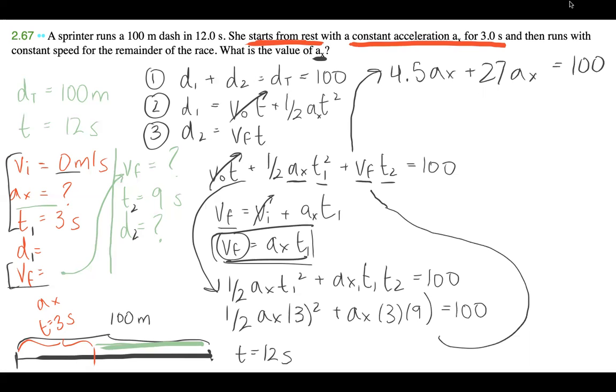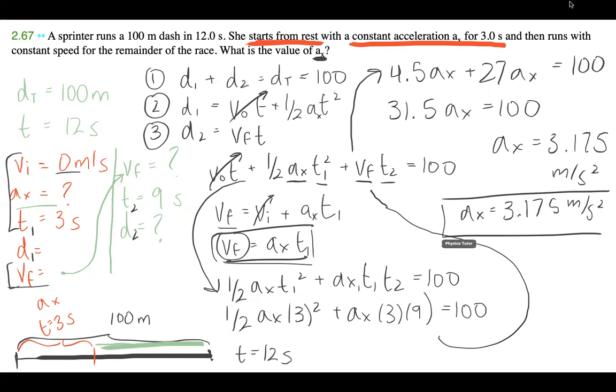And if I plug that into the calculator, I am getting 31.5 ax is equal to 100. And ax, I am getting 3.175 meters per second squared. So I'm going to write that down again, 3.175 meters per second squared. That is our result for ax.